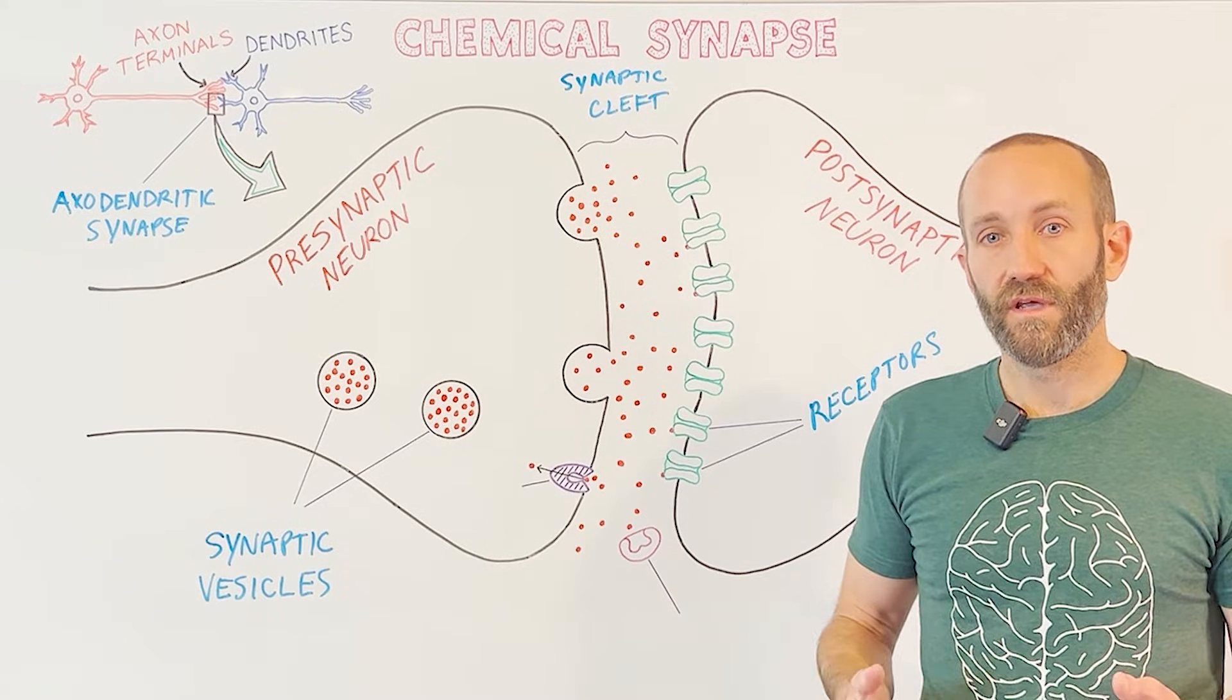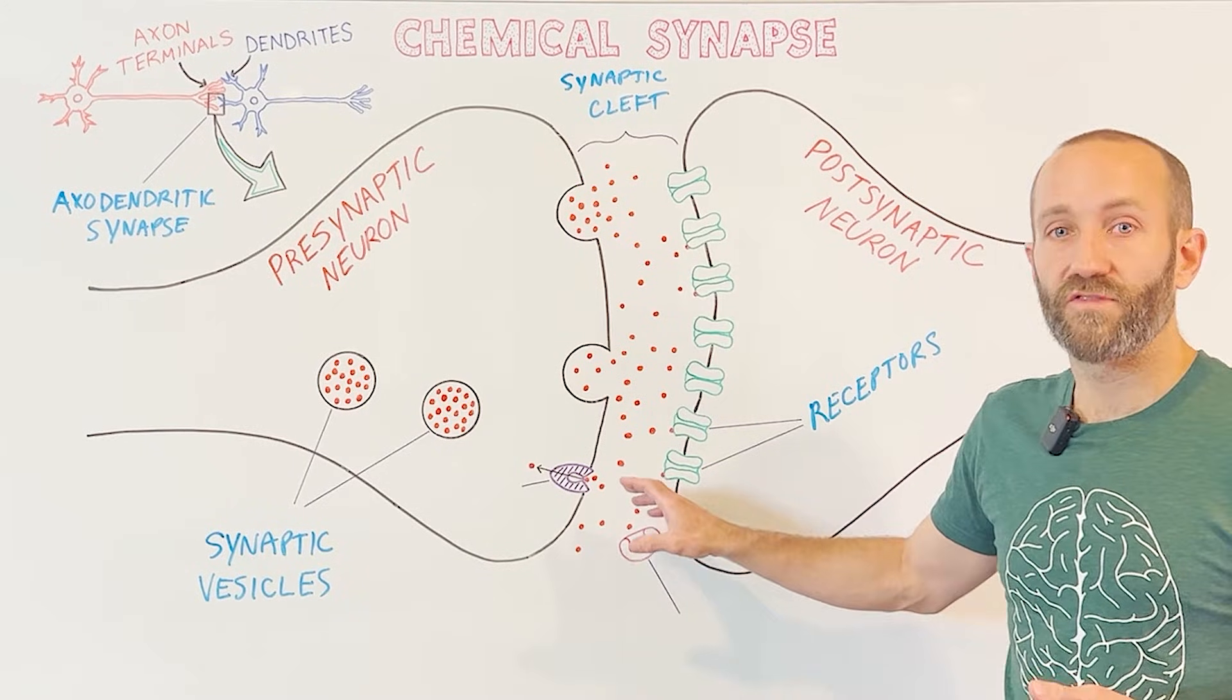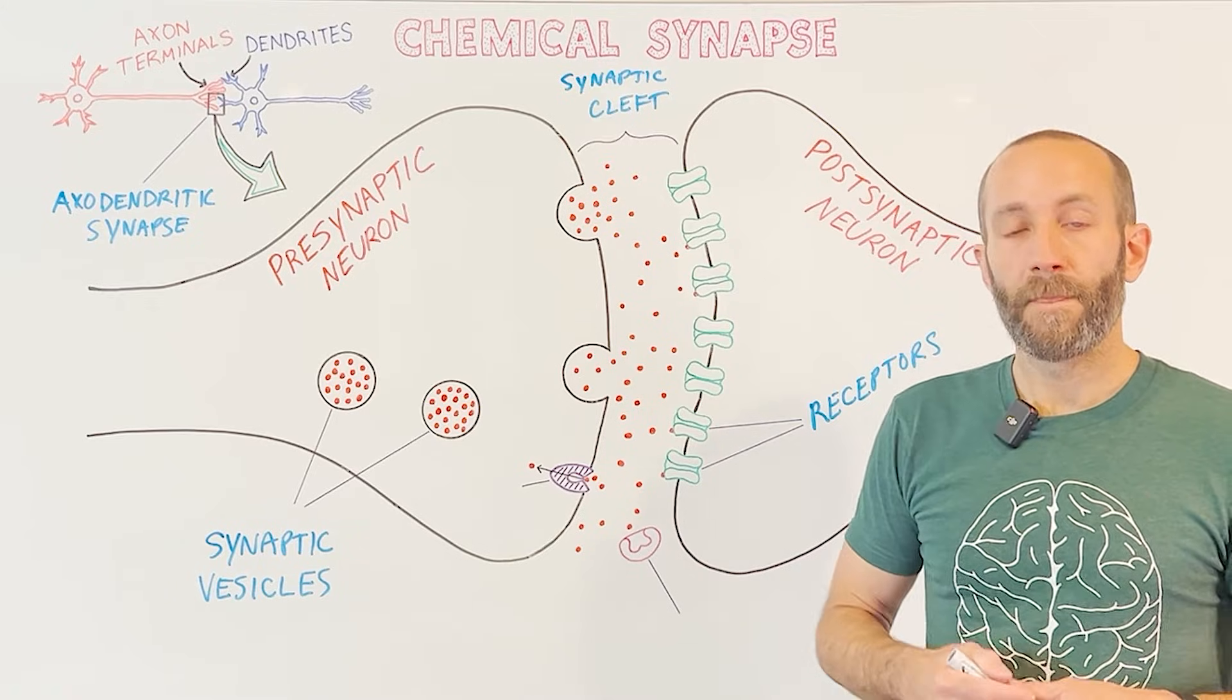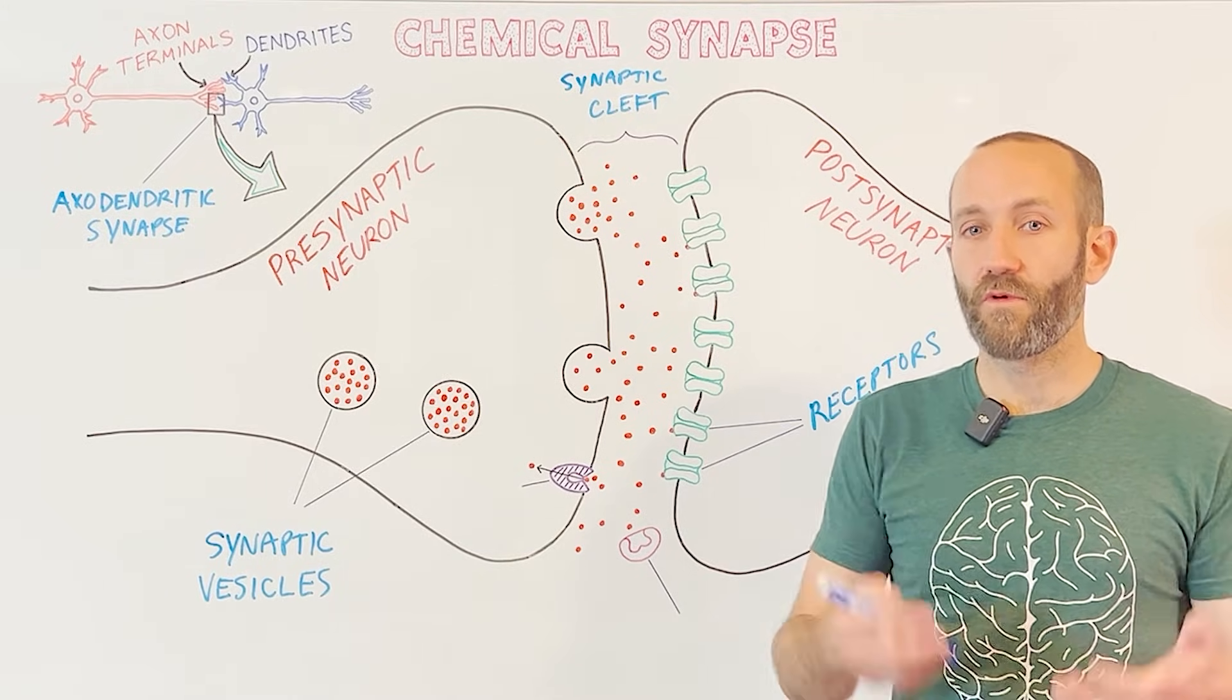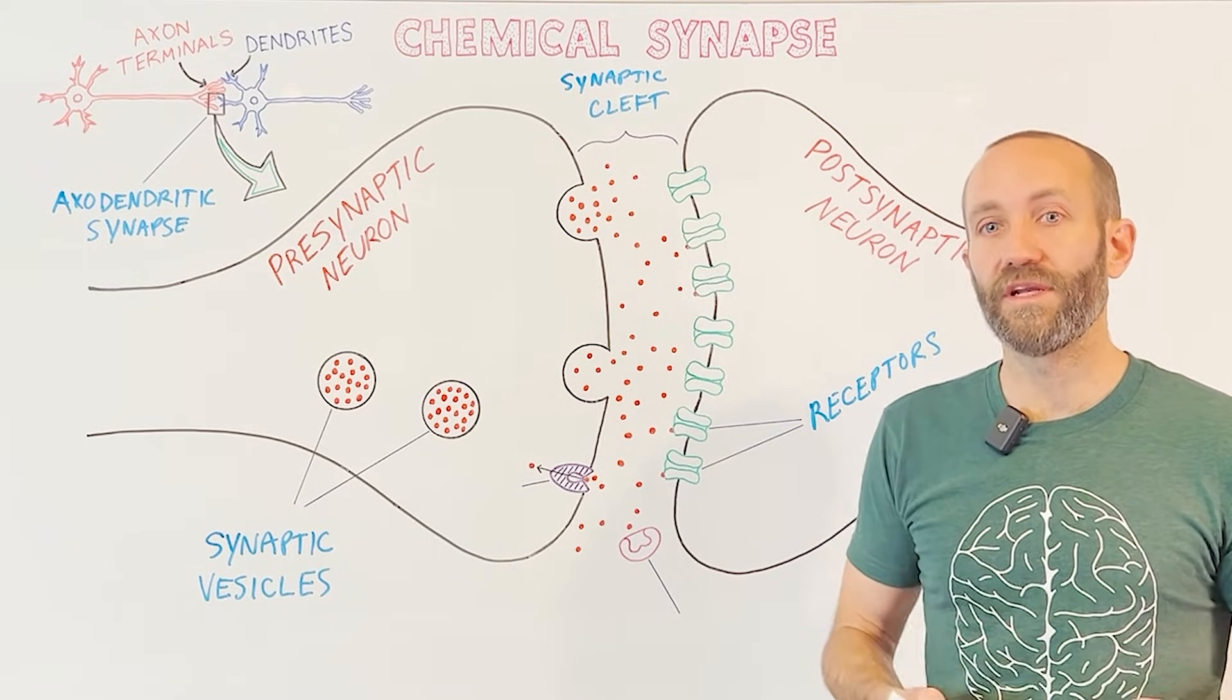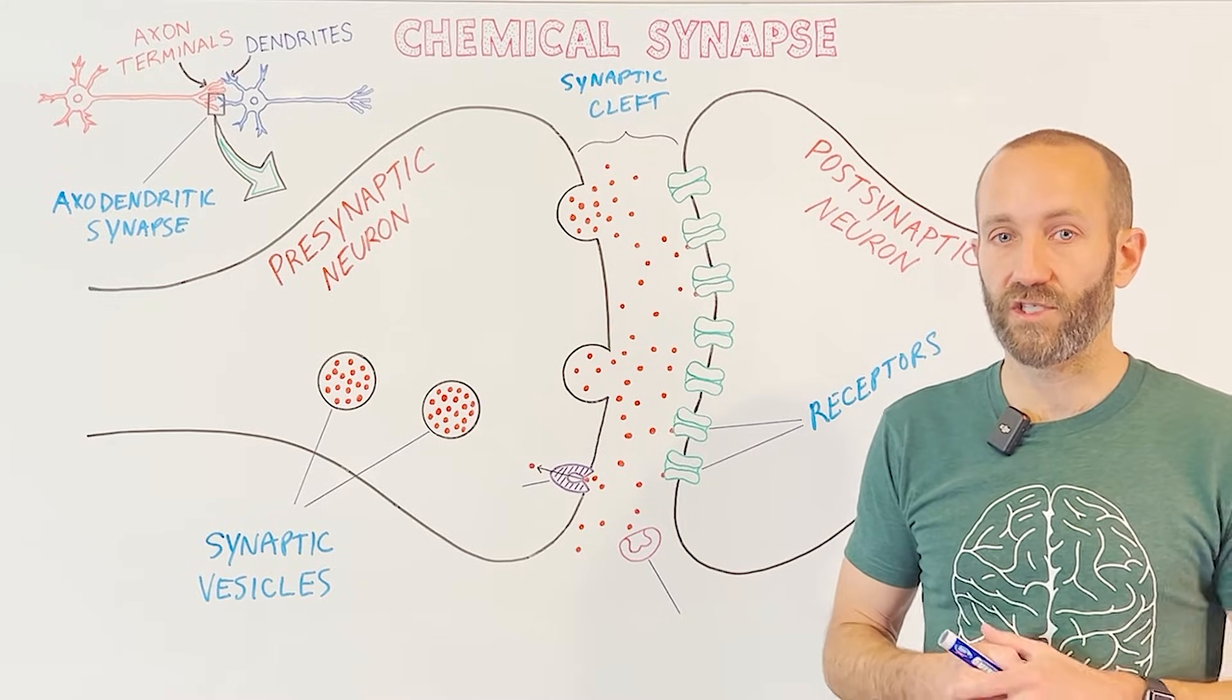Some of this happens through simple diffusion. In other words, some neurotransmitter molecules will just float out of the synaptic cleft. This mechanism, however, only accounts for a small percentage of neurotransmitter molecules, so it isn't enough to terminate synaptic transmission on its own.